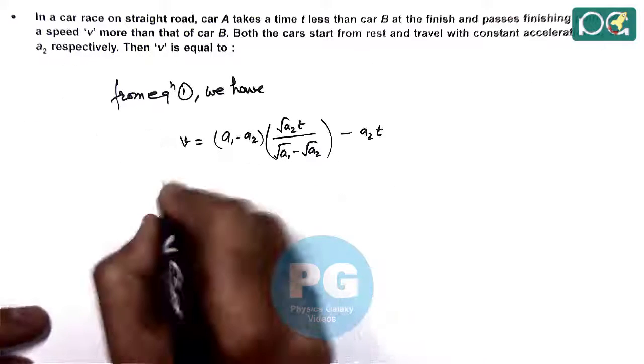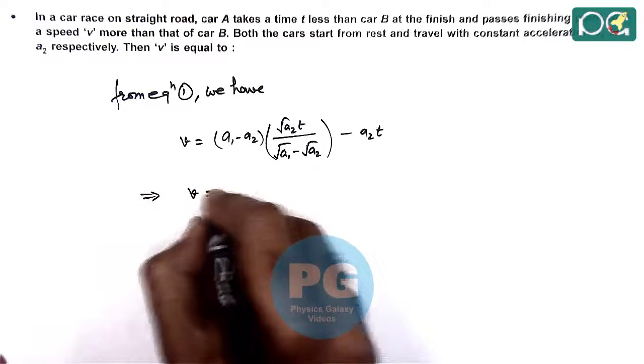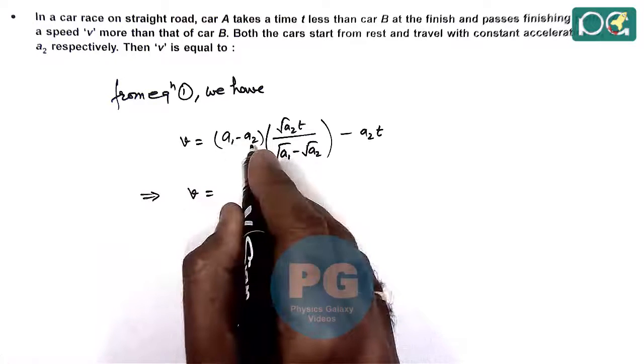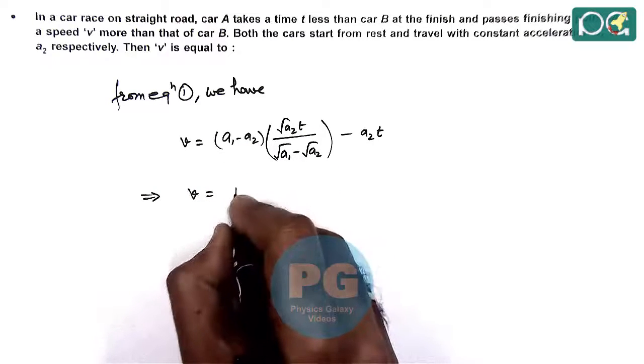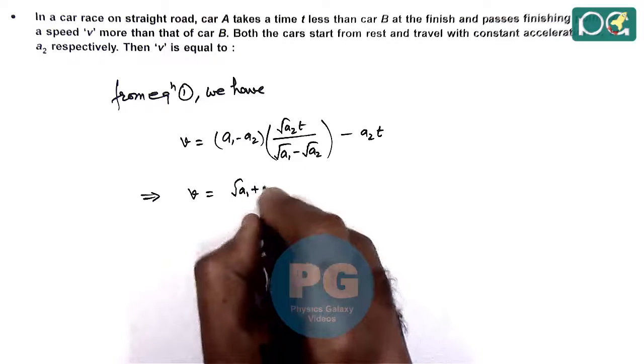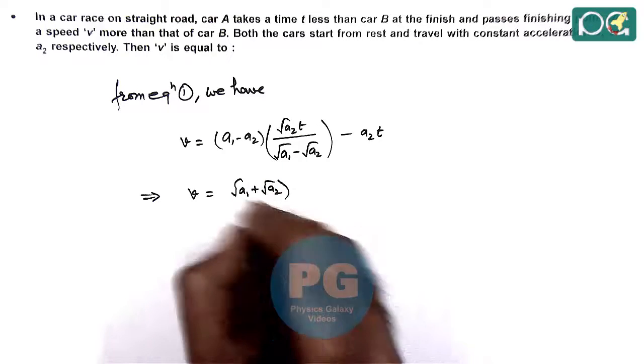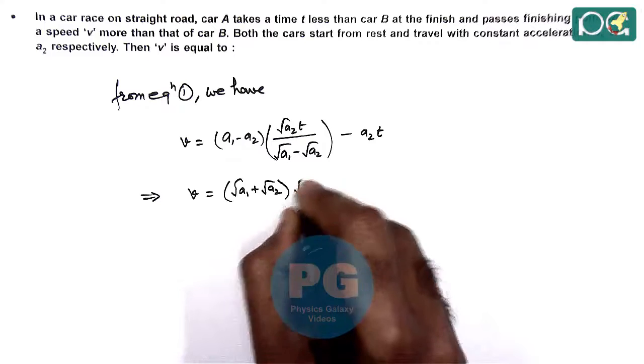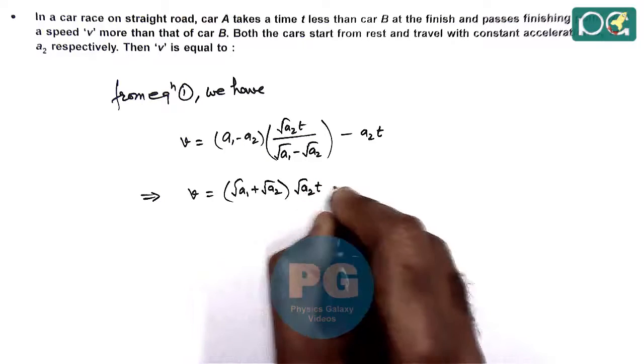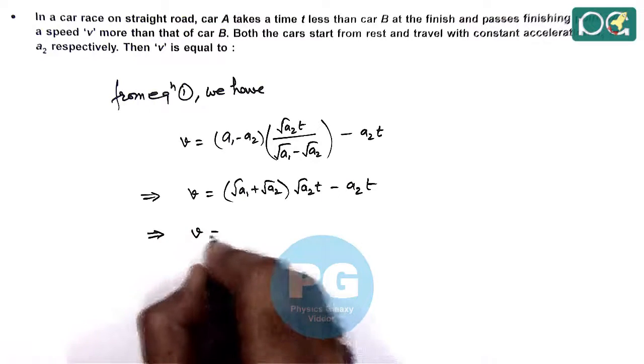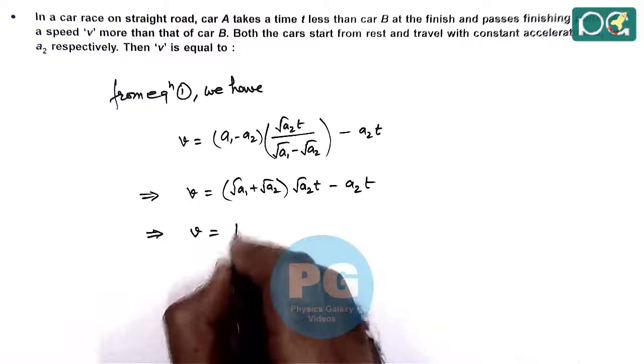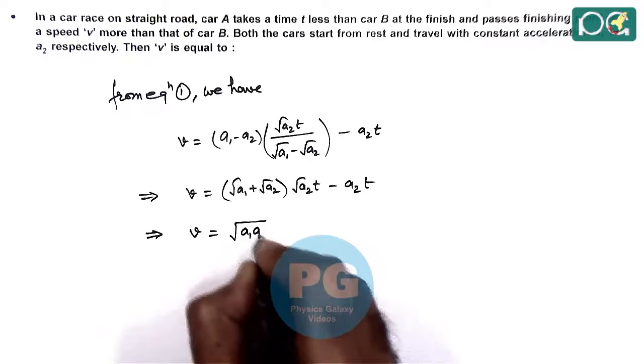So simplifying this, it is giving us the value V is equal to, here a1 minus a2 can be cancelled out with the denominator, and we are having root a1 plus a2 multiplied by root a2 T minus a2 T. So here also a2 T gets cancelled out. This gives root of a1 a2 T.